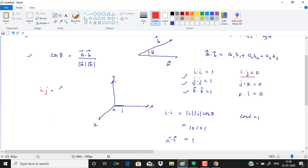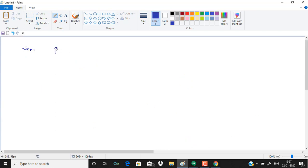For i dot j, you have magnitude of i into magnitude of j into cos of angle which is 90 degree in this case. i and j have 90 degrees between them, so cos 90 is zero, therefore i dot j becomes zero.